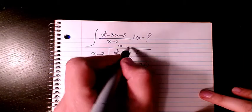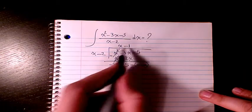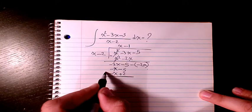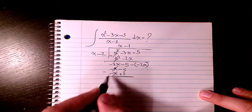Then one more time, I have negative 1 in here. Negative 1 times x is negative x, negative 1 times negative 2 is going to be positive 2. Then we subtract it.